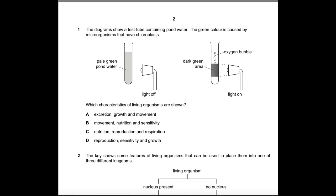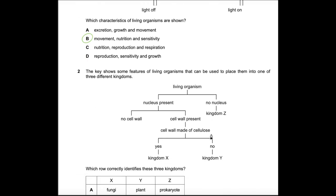Question 1: The diagrams show a test tube containing pond water. The green color is caused by microorganisms that have chloroplasts. Which characteristics of living organisms are shown? We know that sensitivity is occurring because when the lights were off it was pale green, and when turned on there was a dark green area at the bottom, indicating movement. Oxygen production also indicates nutrition. So we need sensitivity, movement, and nutrition — all options are in B, so that's our answer.